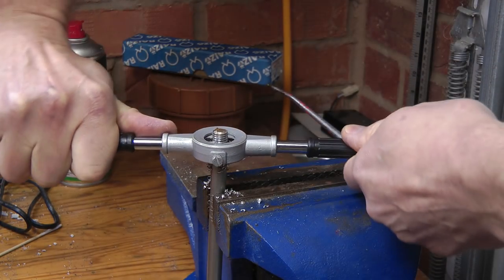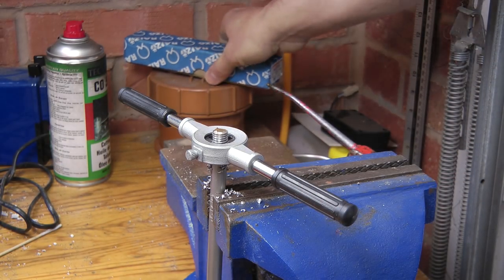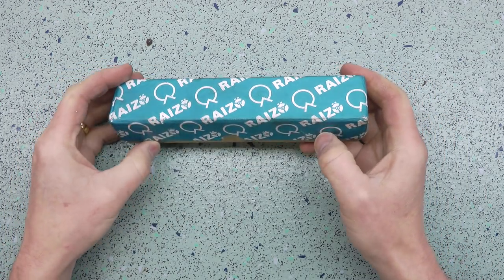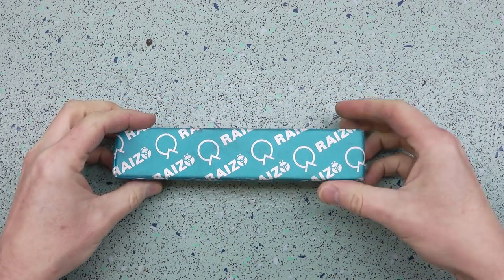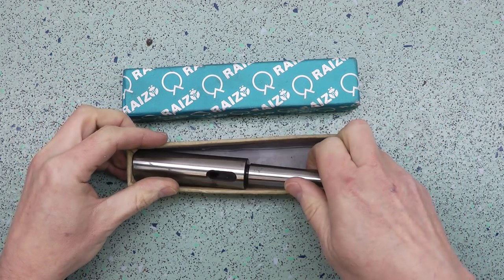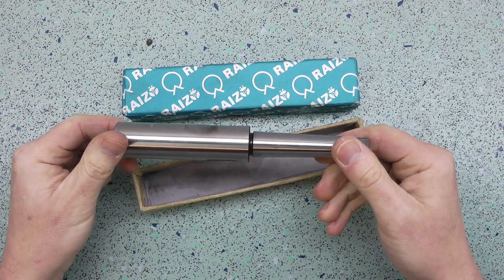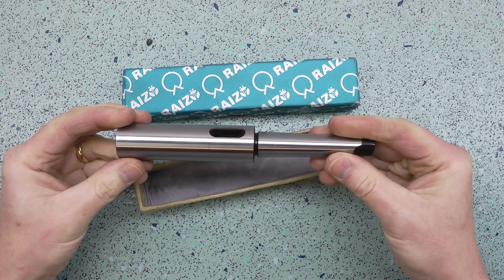For some reason that now completely escapes me, shortly after getting my lathe I got it into my head that I really needed a Morse Taper extension sleeve. In all honesty I don't remember ever using it, it's just sat round gathering dust.